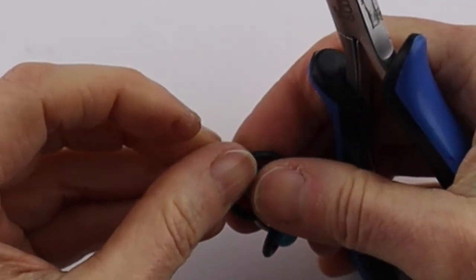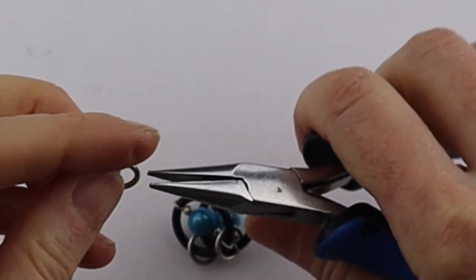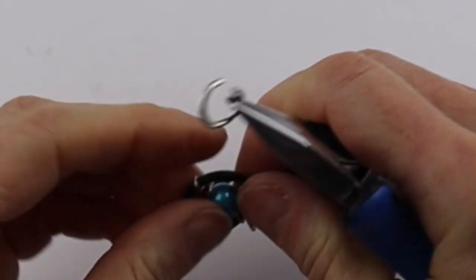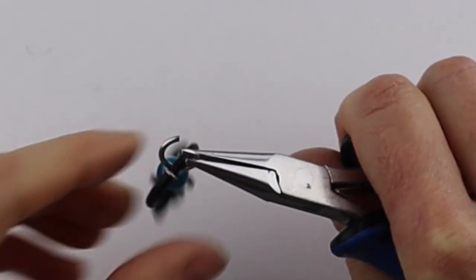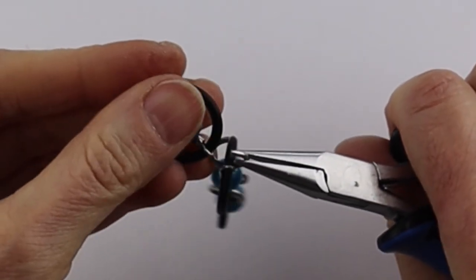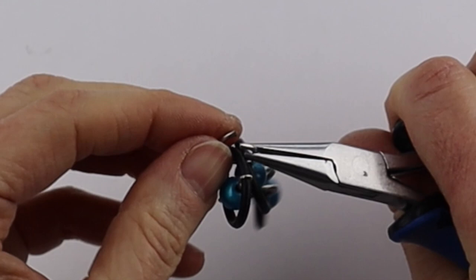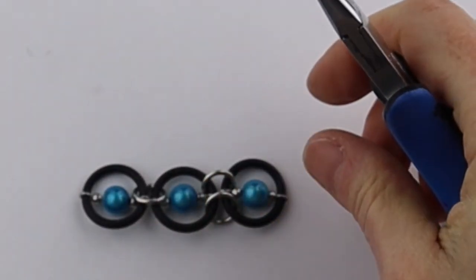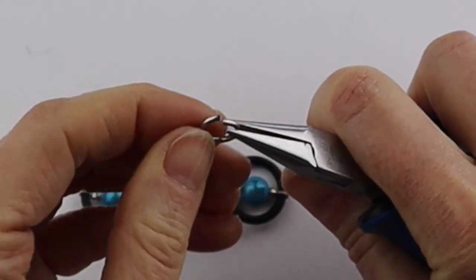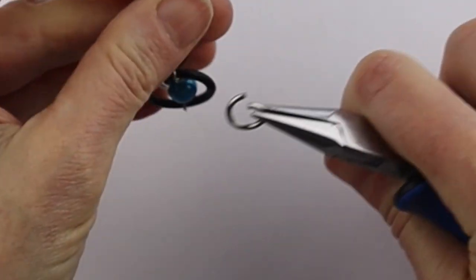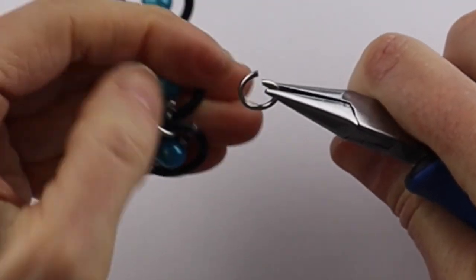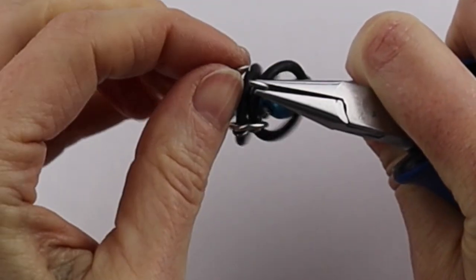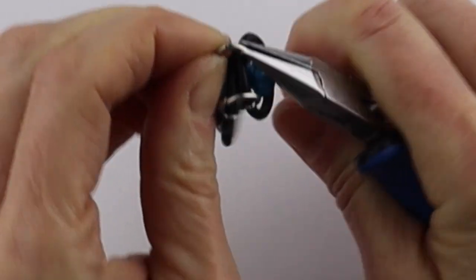We're going to attach them all together. The number that you need is going to depend on the size of your wrist. I have very small wrists, so maybe about six. You might need about seven. It also depends on what size O-rings you've decided to use, because you can do this design with any size O-ring that you want.